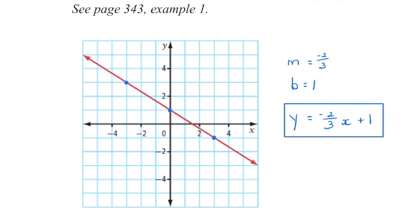In this next graph the y-intercept is one, and we have a negative slope — we're falling to the right, going down two over three. Always reduce your slope if you're able to. Then y equals mx plus b gives us the equation of the line.